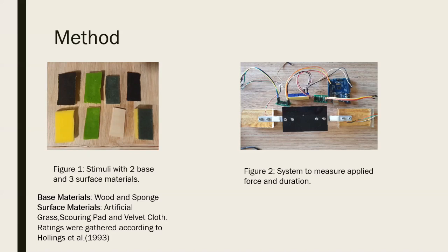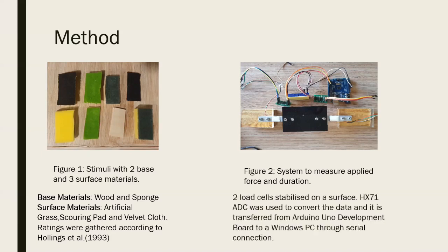The thickness of the surface materials were between 2 to 3 millimeters in order to eliminate the compliance and deformation effect. We measured the applied forces on objects through two load cells pinned to a stable surface and gathered the data by converting it to digital by an ADC and transferred it through the serial port to a PC. We asked participants to rate their applied force and the softness and hardness of the objects through the scale of 1 to 9.